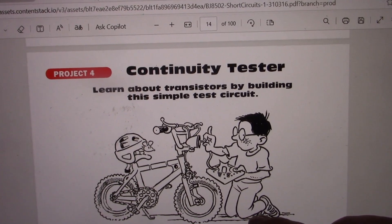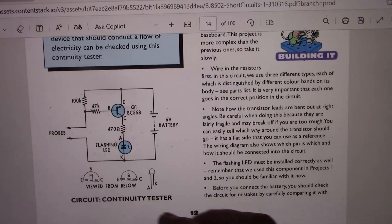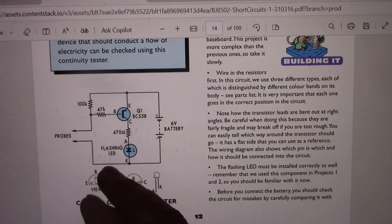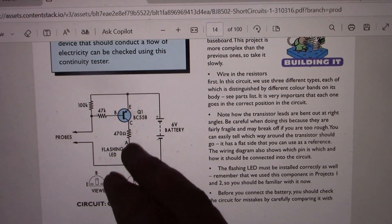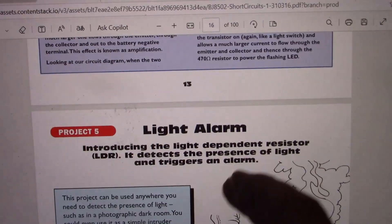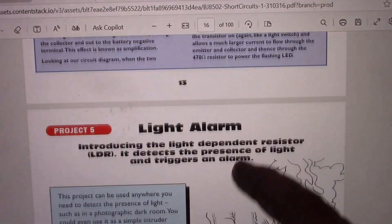Other projects - the continuity tester, that was also in the Funway book. A little bit different. The Dick Smith Funway one was just an LED in series with battery, resistor and probes. This one has a transistor so it's possibly a bit more sensitive. And like with the Funway books, a little box telling you how it all worked.